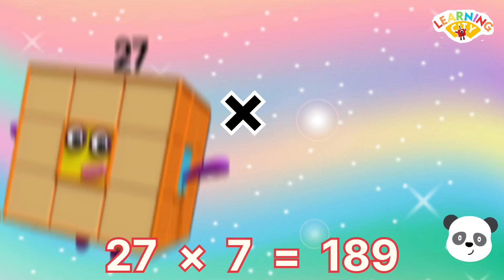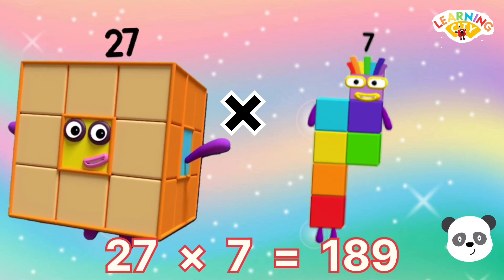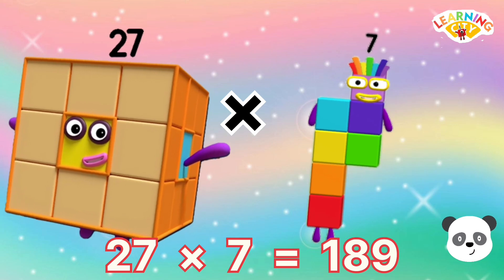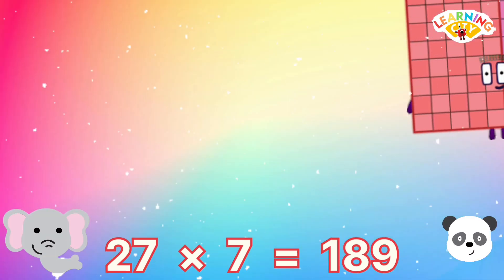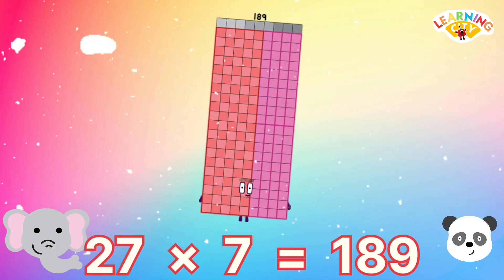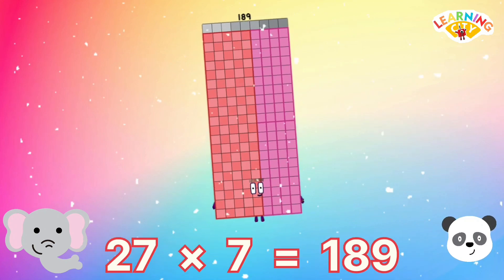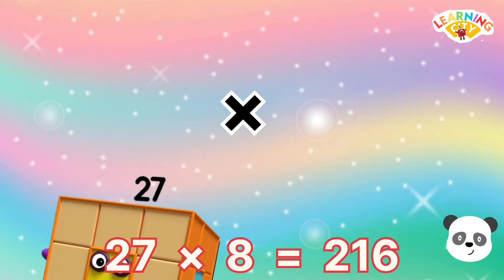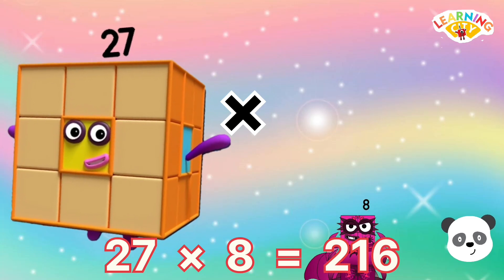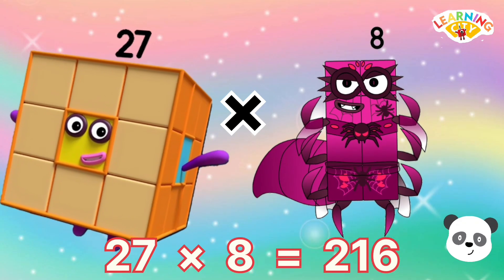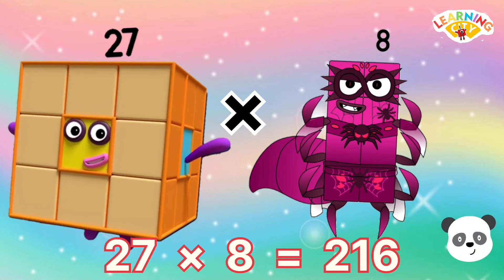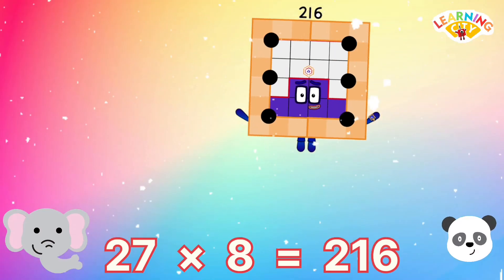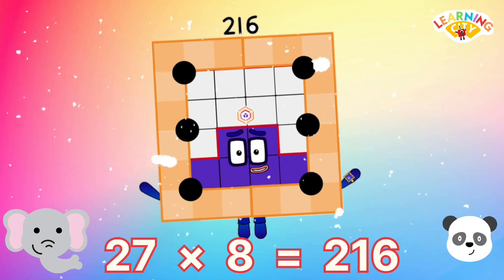27 multiply 7 equals 189. 27 multiply 8 equals 216.